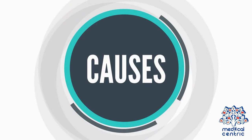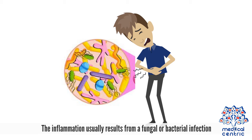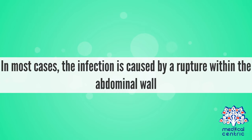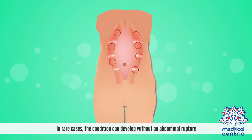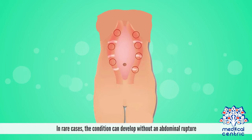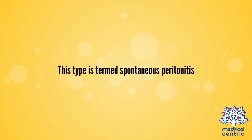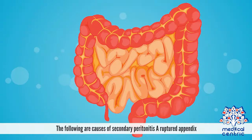The inflammation usually results from a fungal or bacterial infection. In most cases, the infection is caused by a rupture within the abdominal wall. In rare cases, the condition can develop without an abdominal rupture. This type is termed spontaneous peritonitis. The following are causes of secondary peritonitis.